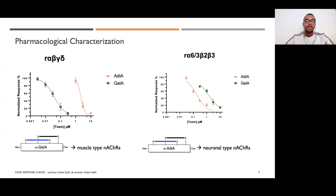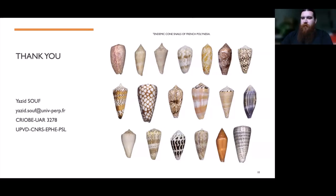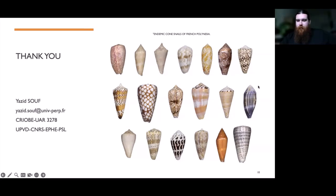So we have a lot of cone snails endemic from French Polynesia that we want to analyze and see the conotoxins, to synthesize them and understand the biological activity of these conotoxins. So for now, we've just been talking about alpha-conotoxins, but conotoxins are very interesting molecules that have disulfide bond challenges. I thank you for your attention, and I'm here if you have some questions. Thank you very much, Yazid. Really interesting to see some more chemistry-based approaches. Are there any questions from the audience?